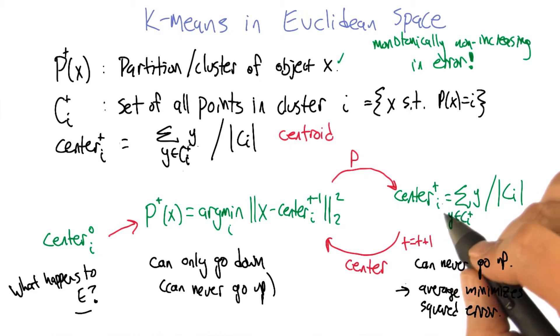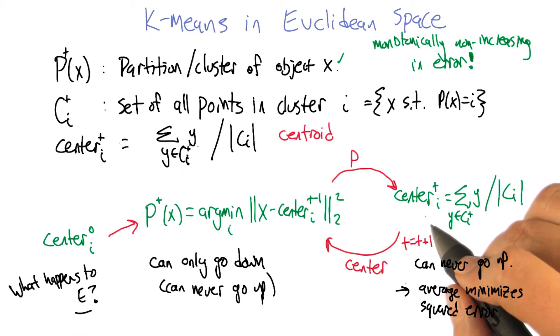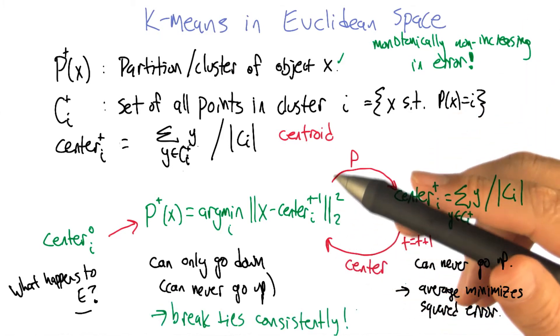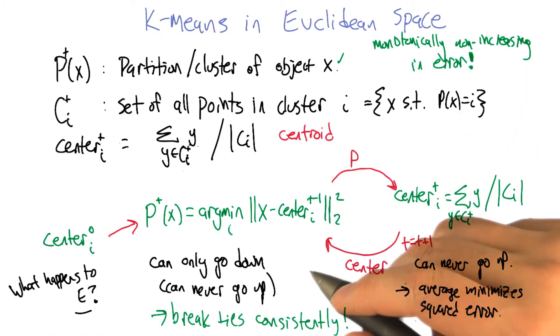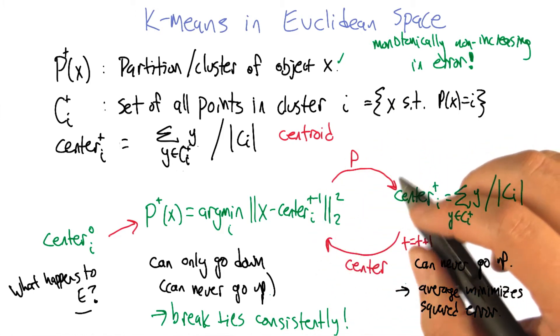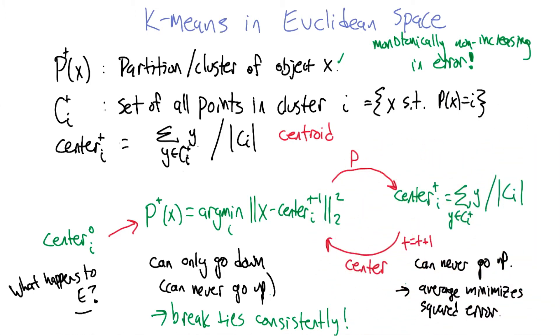So the only tricky part to that is that you could have a point that can go to either of, let's say, two partitions because the distance is the same. So you have to have some way of breaking ties, such that you always get the same answer. For example, I will just say that if I, as a point, can go to any of two partitions, I will pick whichever one has the lowest number. Good idea. So breaking ties consistently, and you gave a particular rule for that, is going to guarantee that we at least don't kind of spin around not improving. Right.